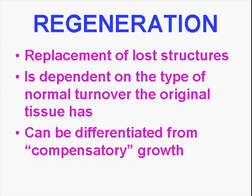What is regeneration? Regeneration is replacement of lost structures. It is totally dependent on the type of normal turnover the original tissue has. For example, if a white cell normally has a turnover of a couple days, that's going to be fast regeneration. If cells like striated muscle or brain don't normally undergo mitosis, that's going to be a really, really long process — in fact, it probably will never really fully happen. We should also understand the difference between regeneration of tissues and compensatory growth. For example, if you had one kidney removed to donate to your sister, the other kidney in your body will become bigger.